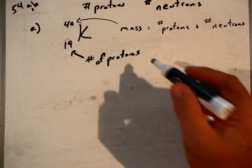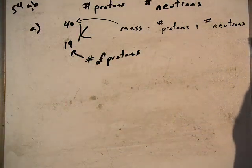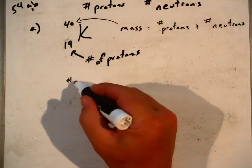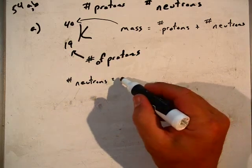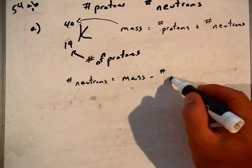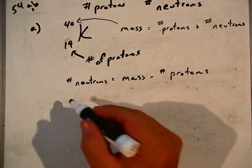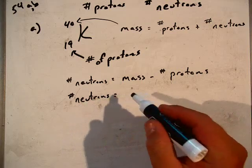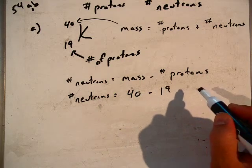That's what the question is asking. So we already figured out how many protons potassium has, it has 19. Now we need to figure out how many neutrons it has. The number of neutrons would then be equal to the mass minus the number of protons. So that value, the number of neutrons would be equal to the mass, which is 40, minus the number of protons, which is 19.